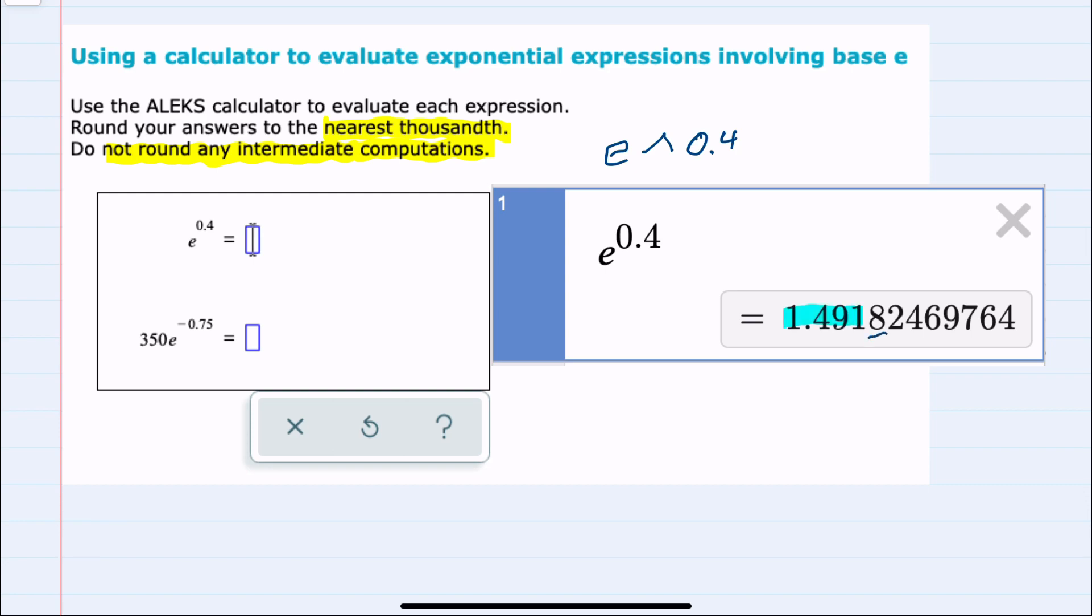Looking at the digit behind the thousandth place, since that's an 8, I will need to round up. So this would be 1.492.